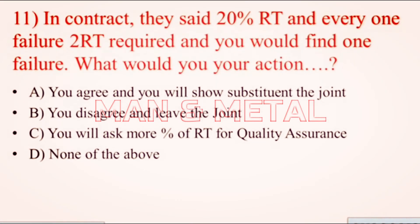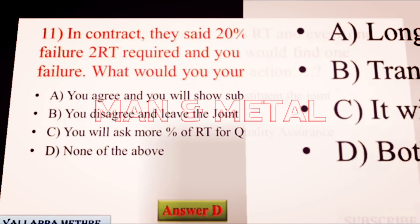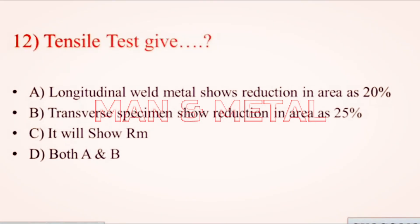Question 11: In a contract specifying 20% RT, where one failure requires additional RT and you find one failure, what is your action? a) You agree and show a substitute joint; b) you disagree and leave the joint; c) you will ask for more RT percentage for quality assurance; d) none of the above.